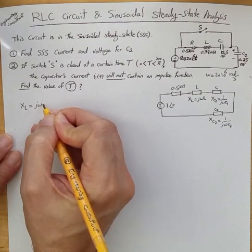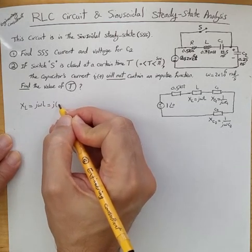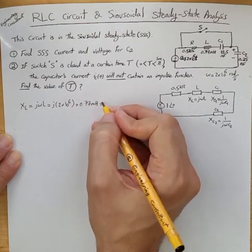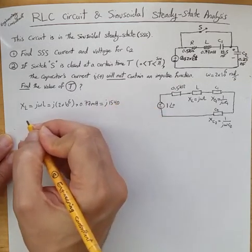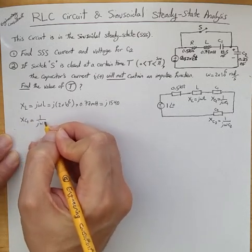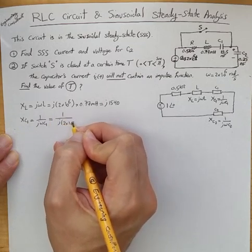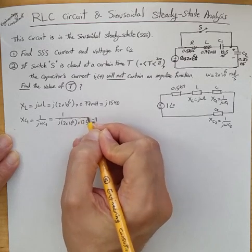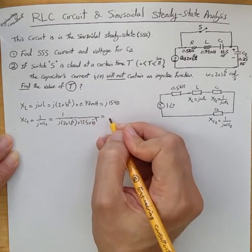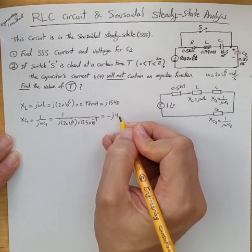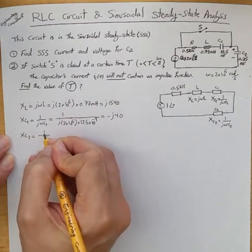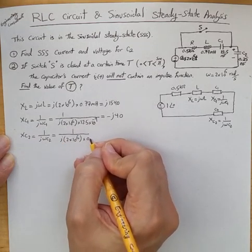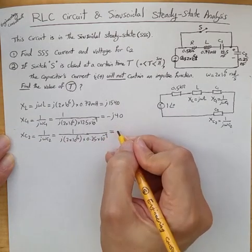XL = jωL = j × 2×10⁶ × 0.77 millihenry, which results in j1540. Then XC1 = 1/(jωC1) = 1/(j × 2×10⁶ × 12.5×10⁻⁹), which results in −j40. And XC2 = 1/(jωC2) = 1/(j × 2×10⁶ × 0.25×10⁻⁹), which results in −j2000.